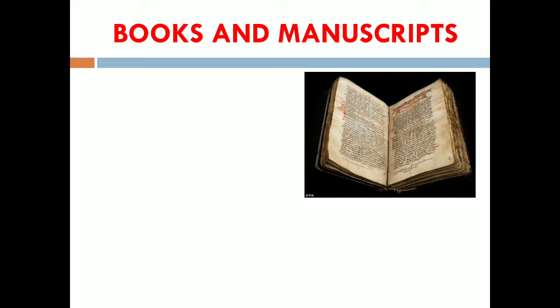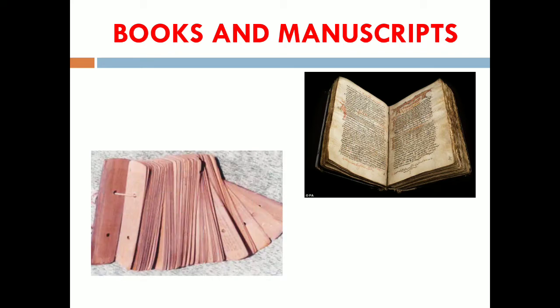Ancient Indian books and manuscripts were written on perishable materials such as cloth, palm leaves, and bark of trees. The palm leaves and barks were made into long strips; these long strips together formed a book and scripts were written on them. Some of them were illustrated with miniature paintings — miniature painting meaning very small-sized painting.